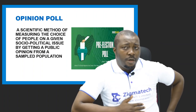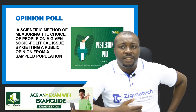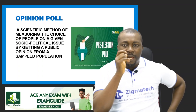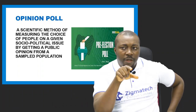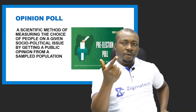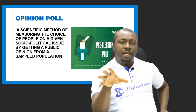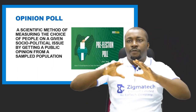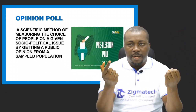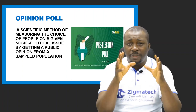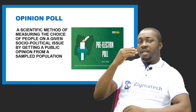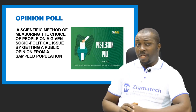Let's talk more on opinion polls. Opinion polls refer to a scientific method of measuring the choice of people on a given socio-political issue by getting public opinion from a sampled population. We want to know how people will vote in a particular election, so we take samples at random from various states, get responses from them, and use it to determine the probable outcome — the likely outcome of an election, if well conducted.